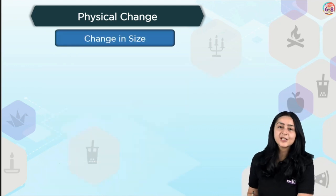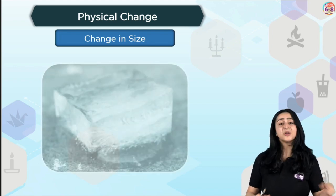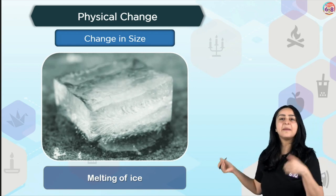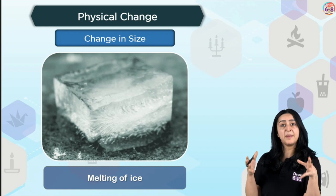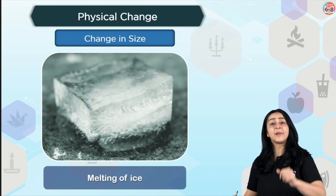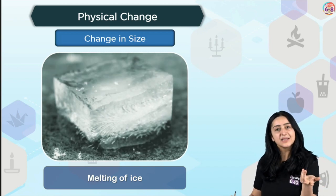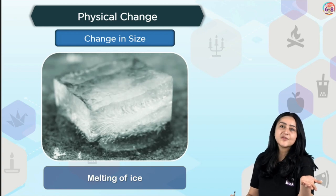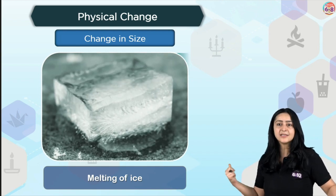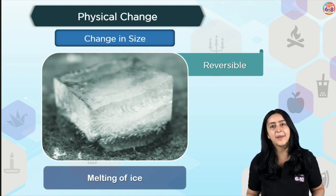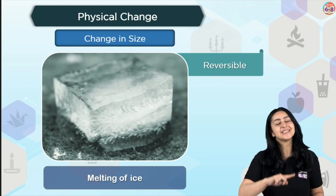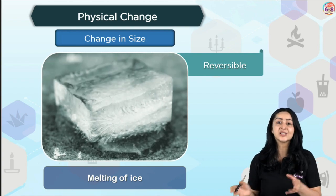Let's talk about change in size. You've got a big block of ice that melts and changes its size — that's a change of size. Or if you take an apple and cut it, the apple changes its size. Now, melting of ice is a reversible change because you can freeze it and it becomes ice again. But cutting an apple — can you get the apple back? No, that's an irreversible change. So physical changes can be either reversible or irreversible.